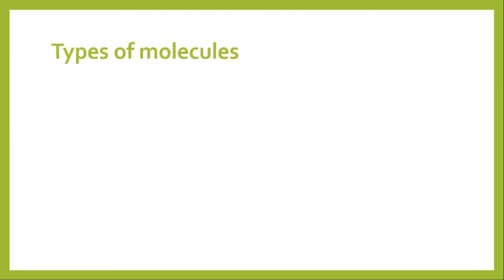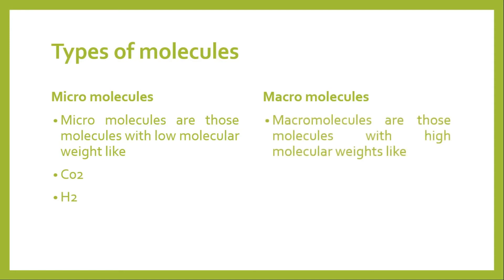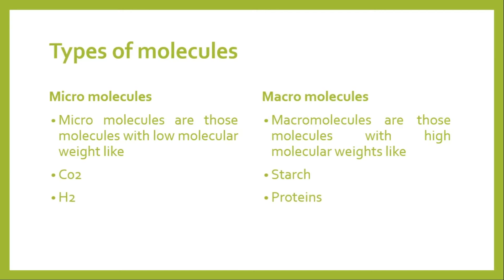Molecules can be categorized on the basis of their weight and on the basis of their composition. Based on molecular weight, molecules fall into two categories: micromolecules and macromolecules. Micro means small and macro means large. Micromolecules are molecules with low molecular weight, like carbon dioxide and hydrogen. Macromolecules are large, like starch and proteins.